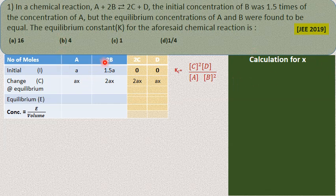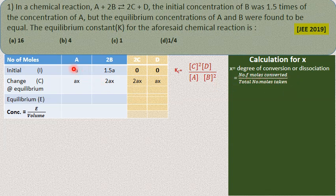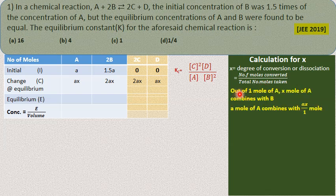The degree of association x equals the number of moles converted divided by the total moles taken initially, which is 'a'. Out of 1 mole of A, x moles combine with B. If A moles are taken, then Ax moles of A combine with B. For B: 1 mole of A combines with 2 moles of B, so Ax moles of A combine with 2Ax moles of B. For C: 1 mole of A gives 2 moles of C, so Ax moles gives 2Ax. For D: 1 mole of A gives 1 mole of D, so Ax moles gives Ax.